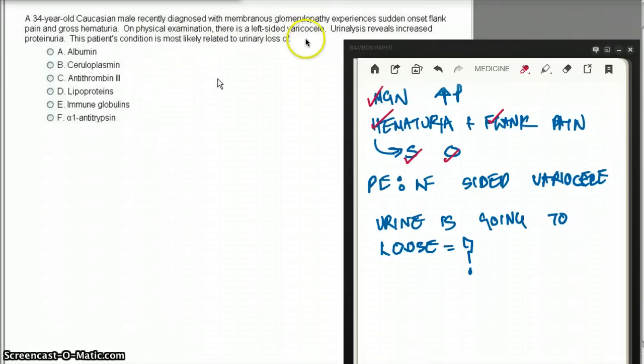On physical exam, there's left-sided varicocele. Urine analysis reveals increased proteinuria. Obviously, this is nephrotic syndrome. There is going to be increased proteinuria. The patient's condition is most likely related to urinary loss of what product? That's what we have to find out.